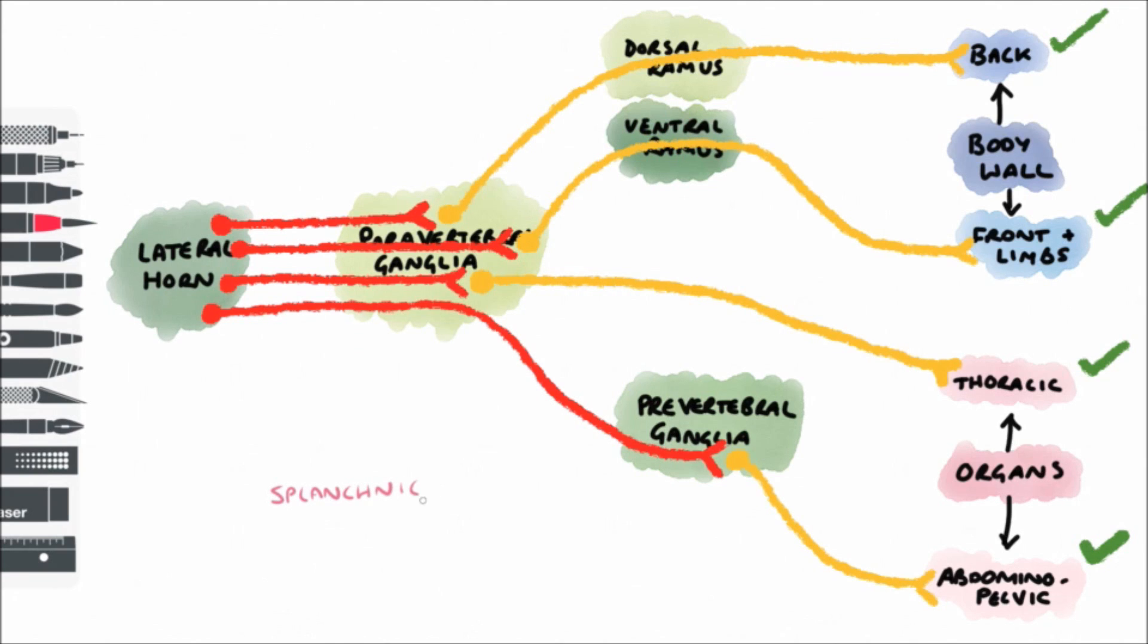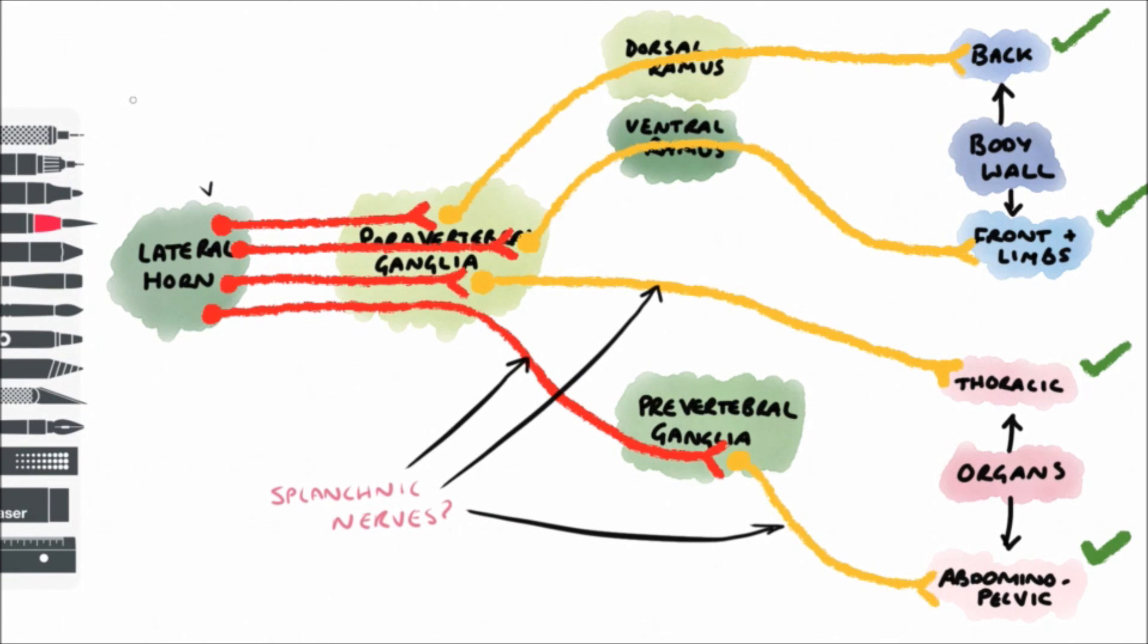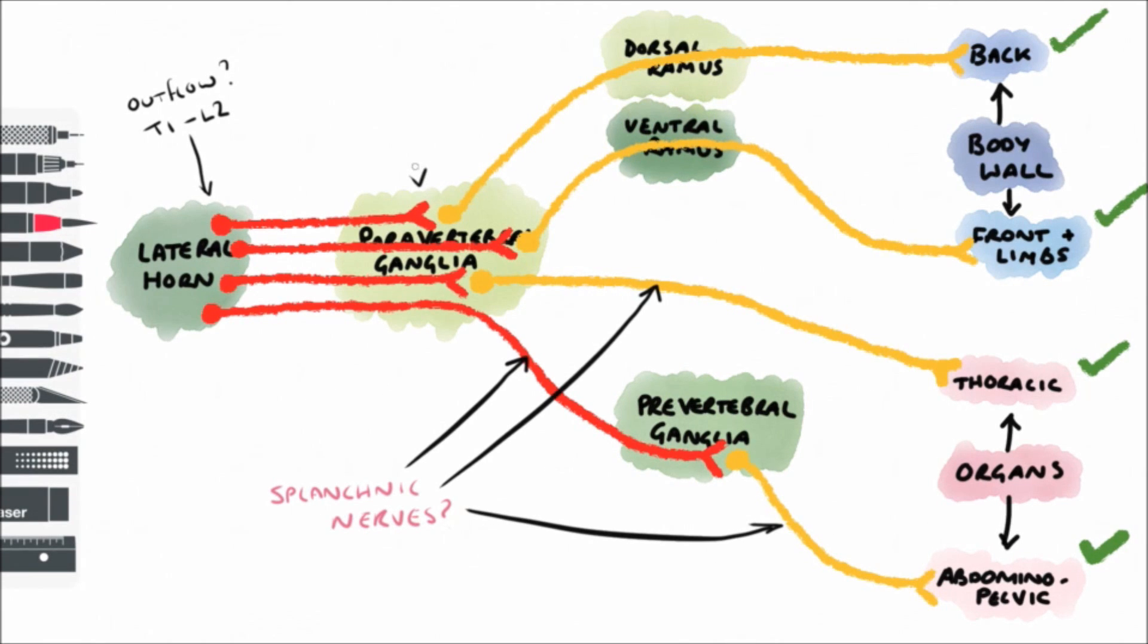Remember that the nerves supplying these organs, those are splanchnic nerves, so some of them are preganglionic, some of them are postganglionic, and in fact you'll also find splanchnic nerves later that are nothing to do with the sympathetic nervous system. Can you remember the outflow of the nervous system? It's between T1 and L2. And also remember that the paravertebral ganglia that I've drawn there is just one blob. Remember that they all link into one chain, the sympathetic chain and the sympathetic trunk.